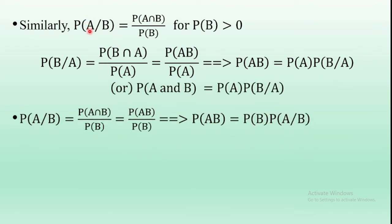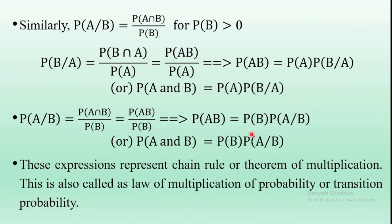Similarly, from P(A|B) = P(A∩B)/P(B), the numerator is also written as P(AB). Taking cross multiplication gives P(AB) = P(B) · P(A|B). These are the mathematical expressions of the conditional probability. These expressions represent the chain rule or theorem of multiplication, also called the law of multiplication of probability or transition probability. This is the concept of conditional probability or multiplication theorem.